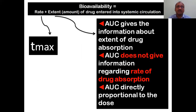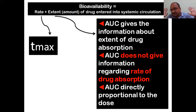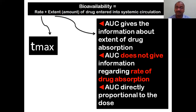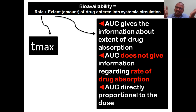Before that, note that measures used to measure bioavailability are different from methods used to measure AUC. Bioavailability includes two terms: rate of absorption and extent of absorption. Rate means speed - how fast the drug is absorbed, one hour or two hours. Extent means the amount of drug entered into systemic circulation.